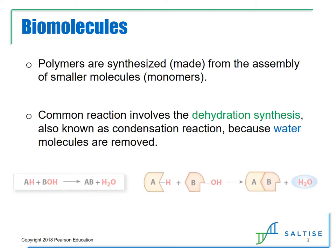In this example, the monomers A and B are linked together to form the polymer AB. In the reaction, the hydrogen from monomer A and the hydroxyl group from monomer B combine together to form water.